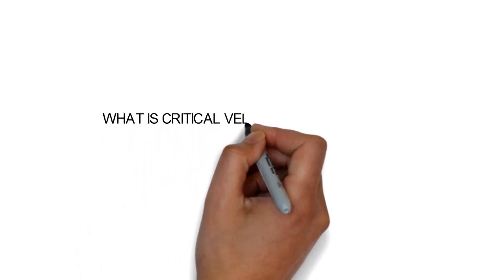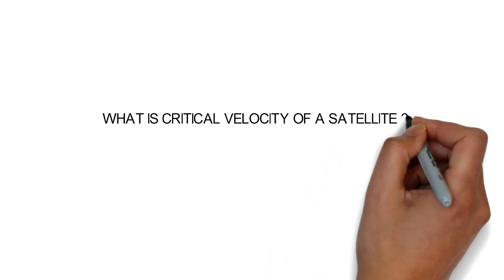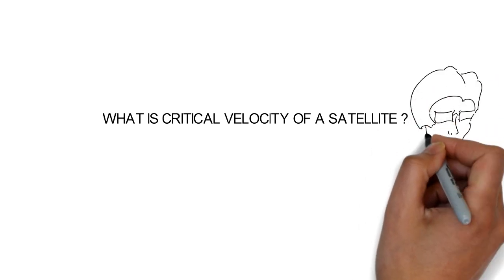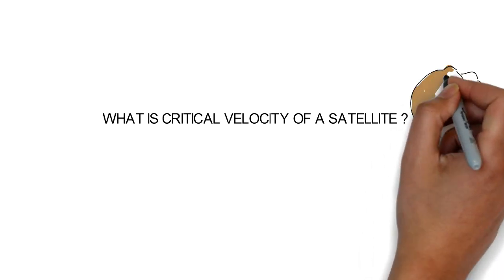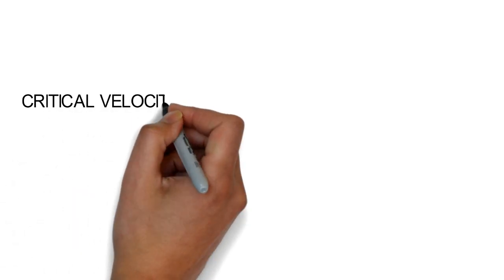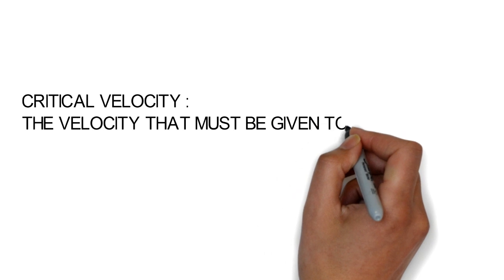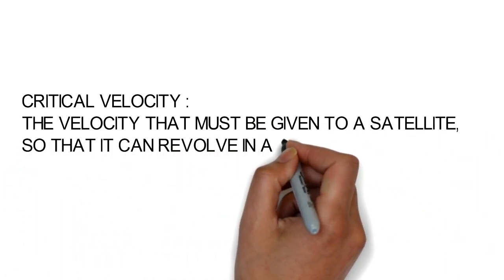What is Critical Velocity of a Satellite? Critical velocity is the velocity that must be given to a satellite so that it can revolve in a circular orbit around the Earth.